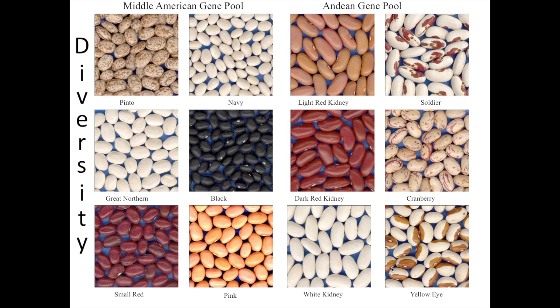The Middle American seed types include pintos, navies, Great Northerns, blacks, reds, and pinks on the left-hand side. On the right-hand side we have the Andean beans: three kidney types and minor classes like soldier beans, cranberry beans, and yellow eye beans. The greatest genetic diversity still lies in the Middle American gene pool where beans originated. There is significantly less genetic variation in the Andean pool, even though you see quite a range of diversity in seed color.